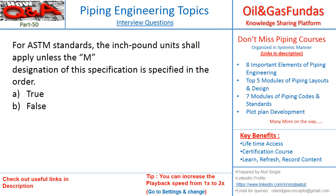Next question: for ASTM standards, the inch-pound unit shall apply unless the M designation of the specification is specified in the order — true or false? This is true. Until the purchaser mentions M in the purchase order, the manufacturer will consider it as inch-pound. There are two unit systems — metric or inch-pound — and inch-pound is the default unless otherwise specified.